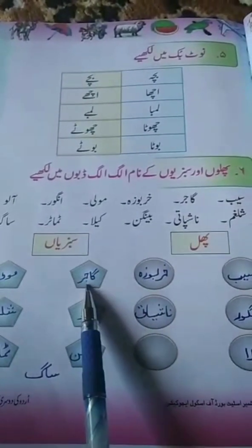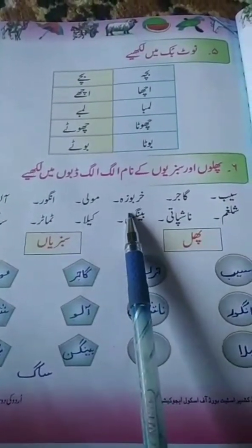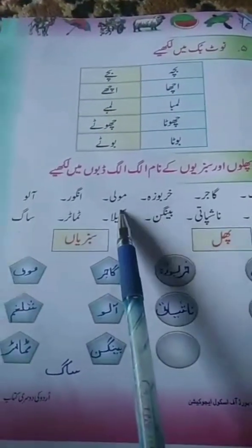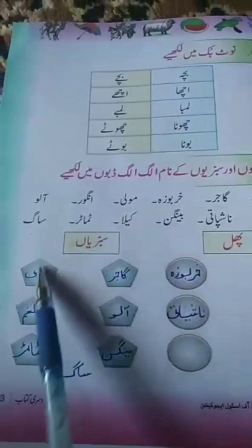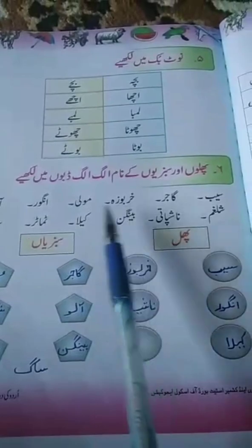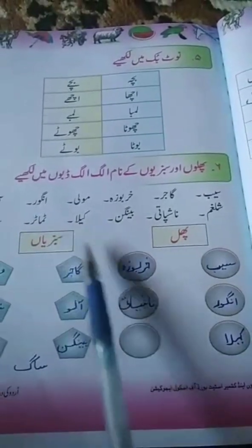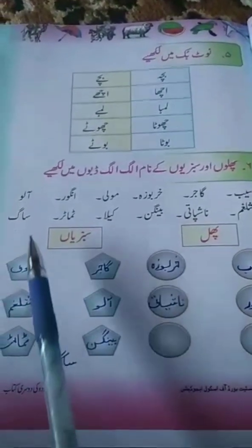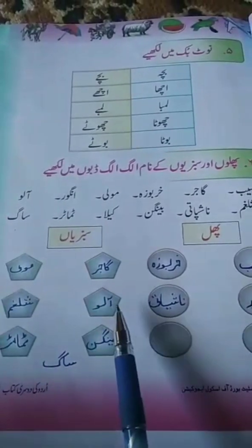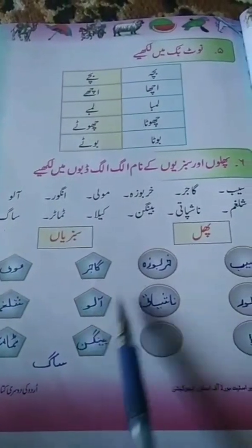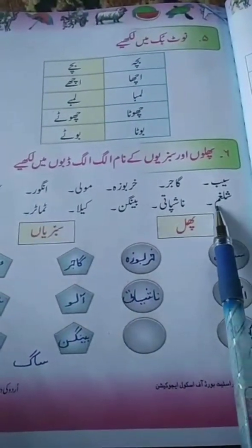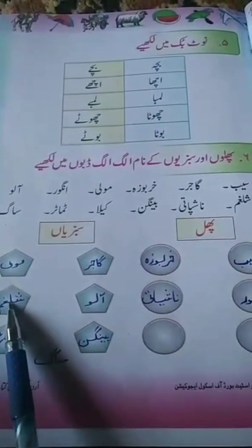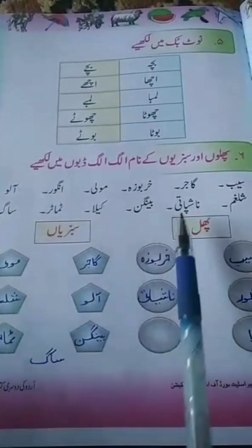You can eat berries. 1. Carbusa (watermelon). 2. Muli (radish). 3. Angu (grapes). 4. Alu (potato). 5. Shalgam (turnip). 6. Shalgam. 5. Nashpati (pear). Bangan (eggplant).